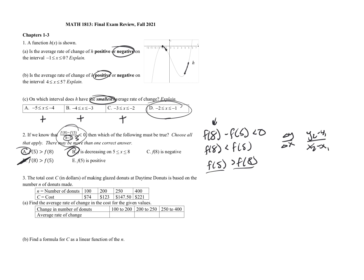On to question three. We have a table where n is the number of donuts and C is the cost. We want to find the average rate of change in cost for each given interval. The formula we'll follow is y2 minus y1 over x2 minus x1, or change in y's over change in x's. For the first interval, 100 to 200, we have (123 minus 74) over (200 minus 100), which gives us 0.49.